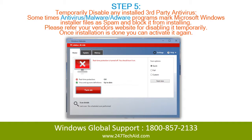Step 5: Temporarily disable any installed third-party antivirus. Sometimes antivirus or malware programs mark Microsoft Windows installer files as spam and block them from installing. Please refer to your vendor's website for instructions on disabling it temporarily. Once installation is done, you can activate it again.